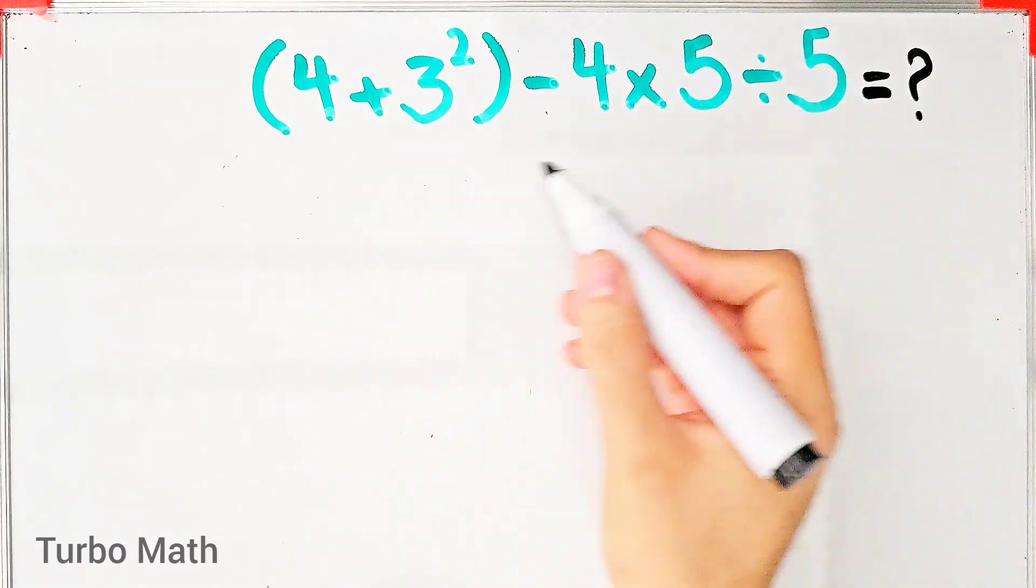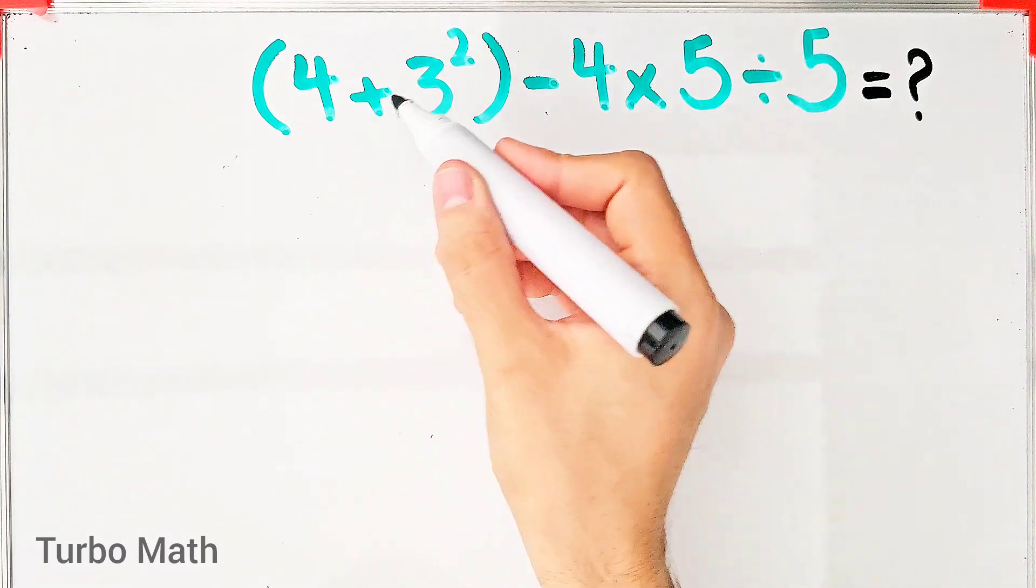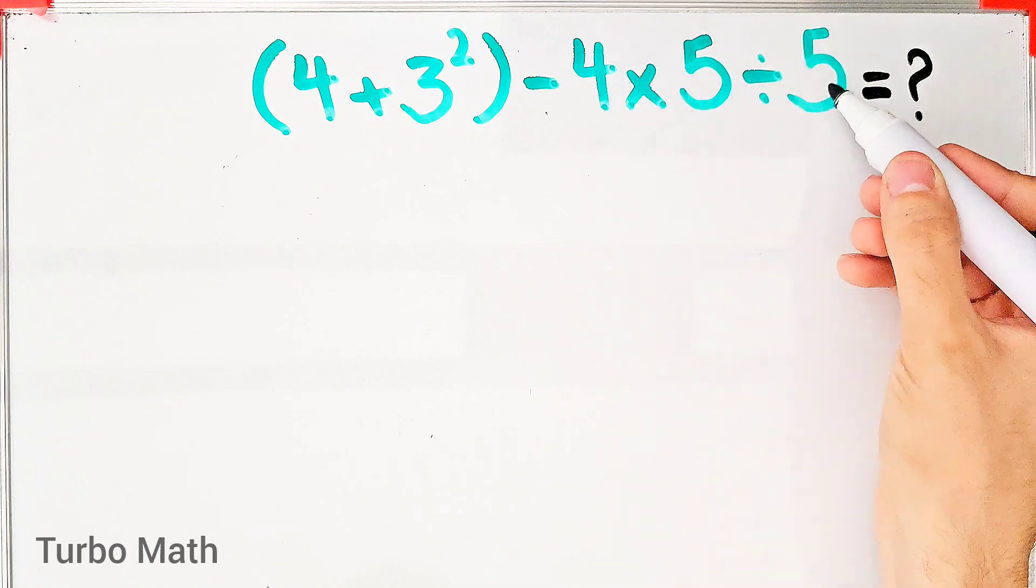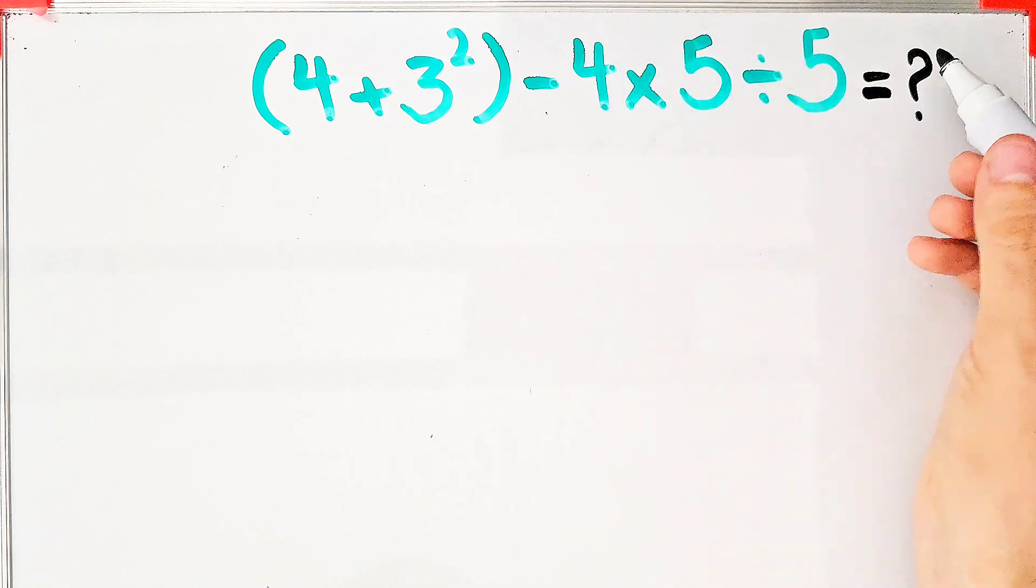Hi friends, welcome to TurboMath channel. 4 plus 3 to the power of 2 minus 4 times 5 then divided by 5. What is the answer of this question?